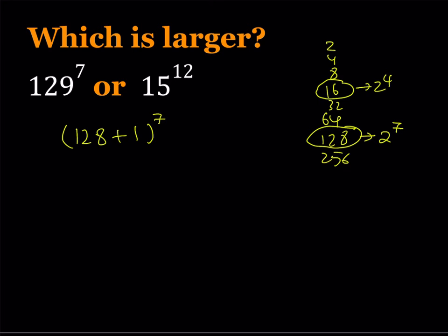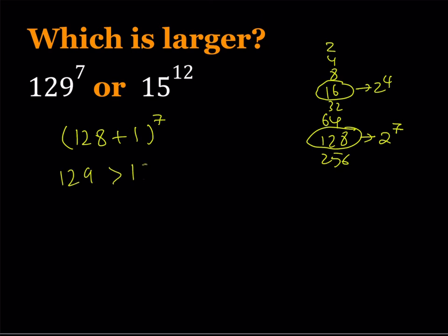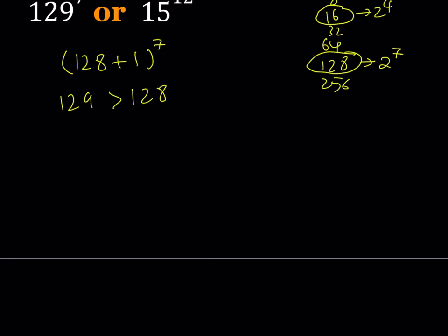Since 129 is greater than 128, I can safely say that when I raise both sides to the 7th power, this is also going to be true, because 7 is a positive power and the base is greater than 1. This allows me to compare 129 to the 7th power, which is one of my numbers, to a power of 2. Let's go ahead and write down 128 as 2 to the 7th power, so we can make it as 2 to the 7th to the 7th, which is 2 to the power of 49. So that's one of the inequalities that I would like to use.